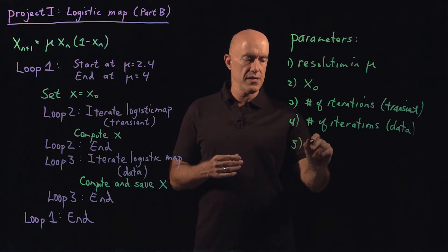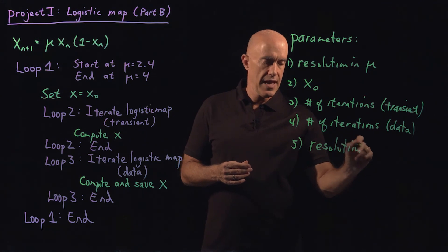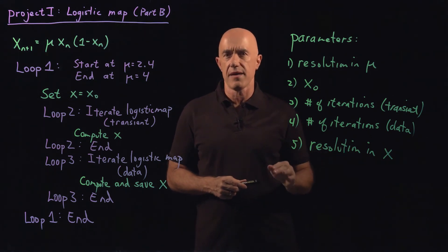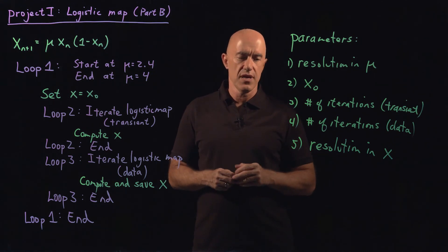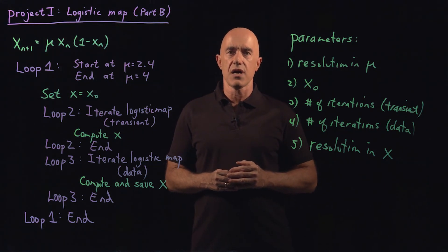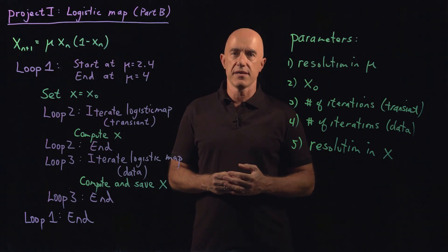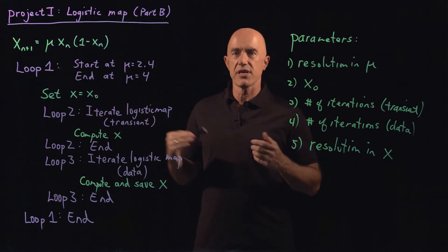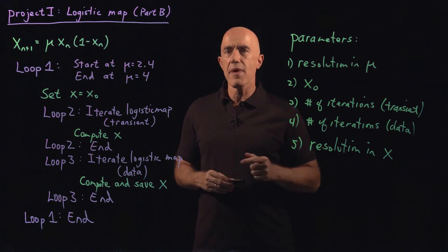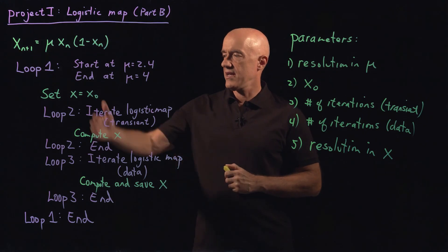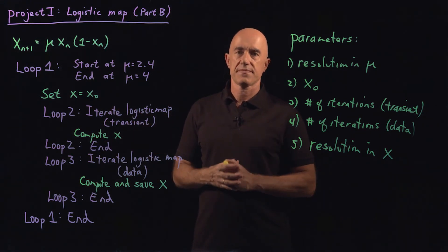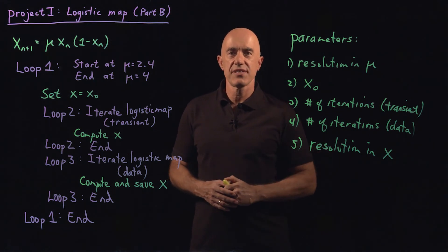For that type of plot, the other parameter you need is the resolution in x. In a lot of problems you spend a lot of time making the graphics look just right, and it's no different here. Most of the time could be spent figuring out how to bin the data and color the pixels. I didn't want to make that the purpose of this project, so I do that for you and provide the code. Your main task in this project is the computational engine, which I've outlined here using three loops. I'm Jeff Chasnoff — thanks for watching, and I'll see you in the next video.